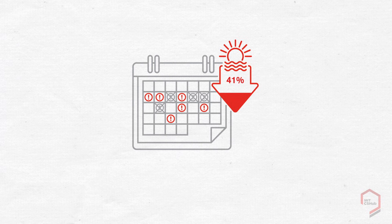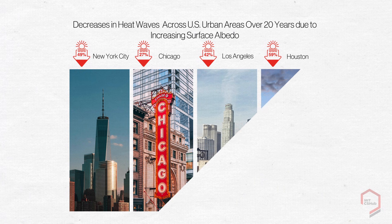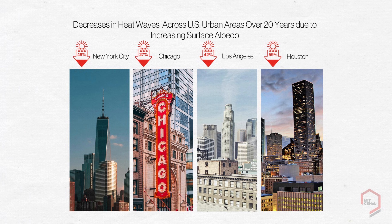We also found that a moderate increase in the albedo of pavements only in U.S. urban areas led to a 41% decrease in heat waves across those areas. As heat waves lead to increased mortality, increasing albedo will not only mitigate climate change and the urban heat island effect, it can also save lives.